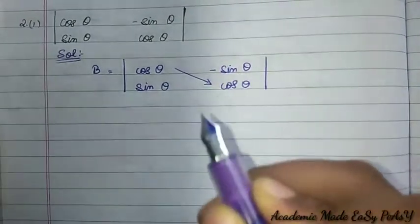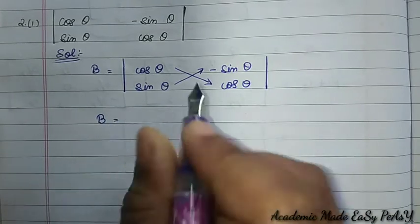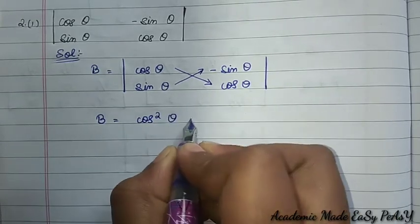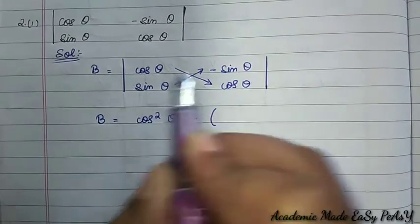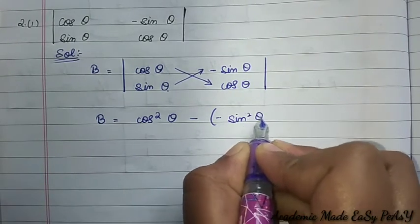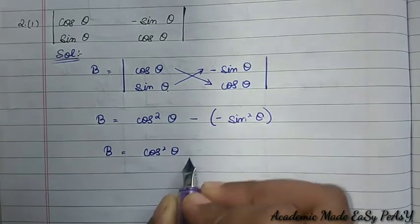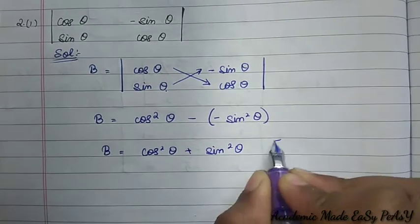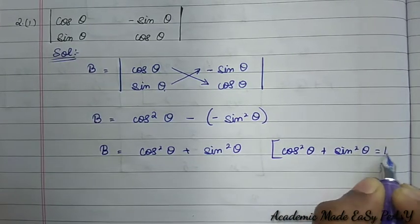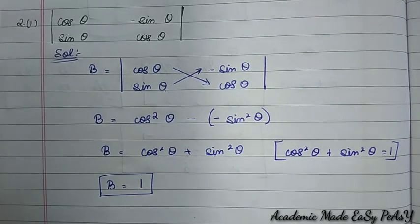So B = cos θ × cos θ − (−sin θ × sin θ) = cos²θ + sin²θ. We know that cos²θ + sin²θ = 1, so the answer is 1. This is the required solution for the given determinant.